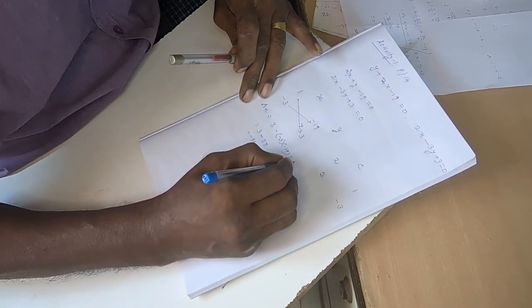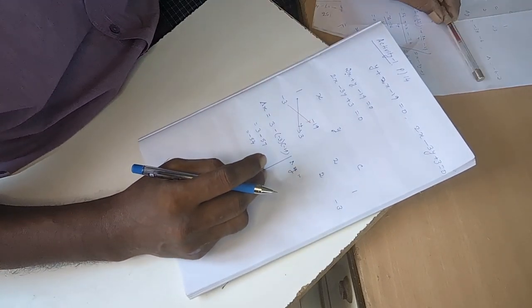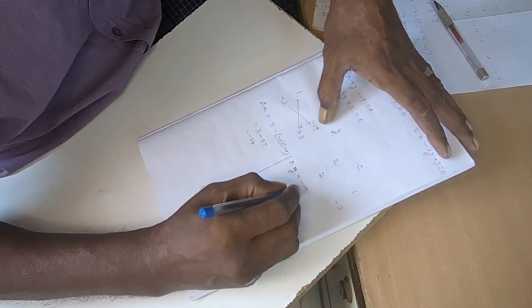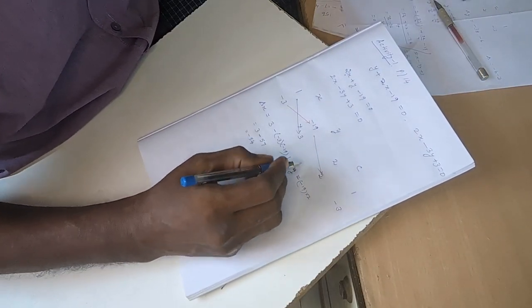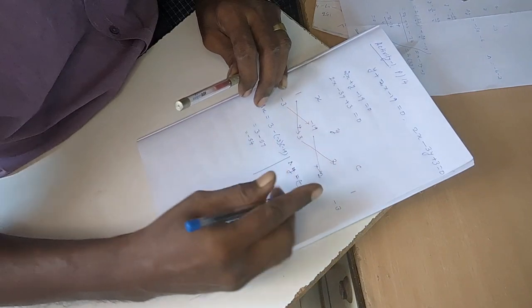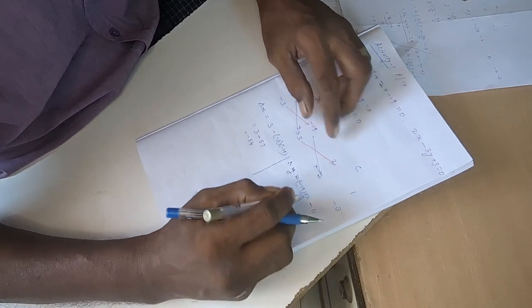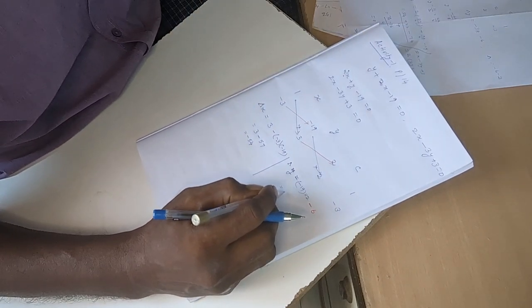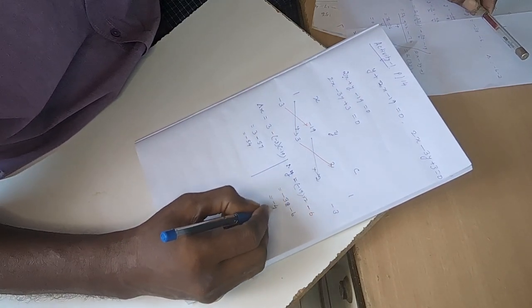Now delta y. Same way, we have to multiply this. Minus 19 into 2. This is plus, so this will come to minus 38. Then minus 3 into 2 is minus 6. This is minus 44.